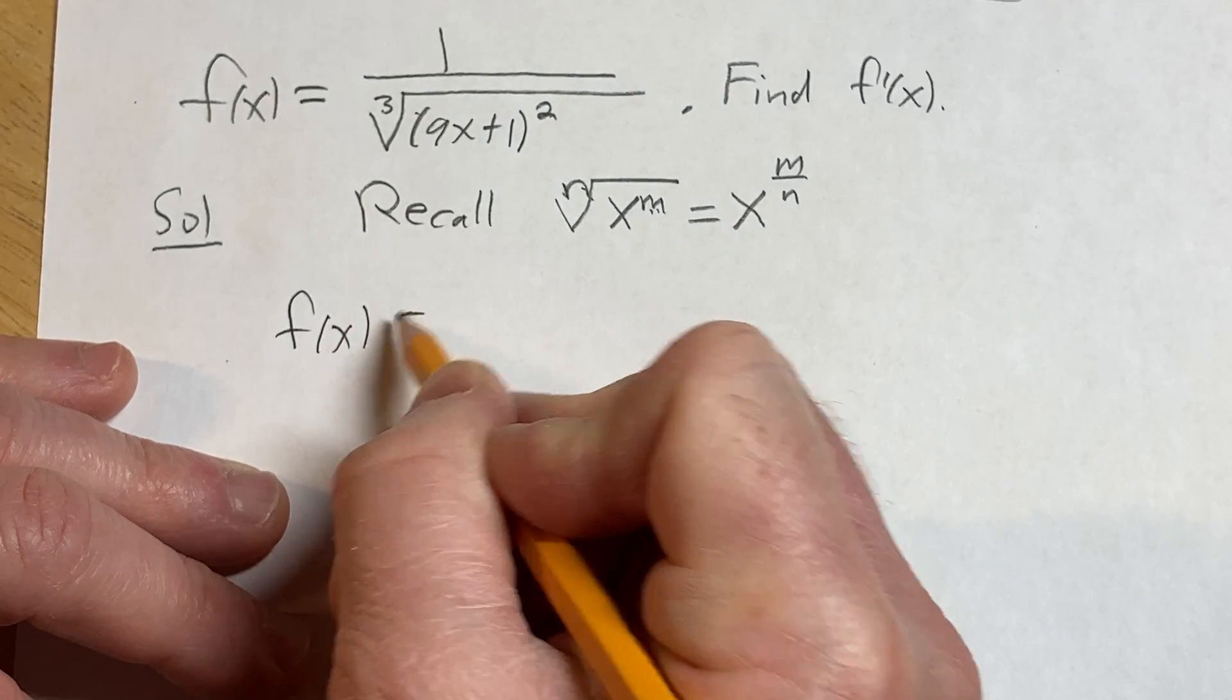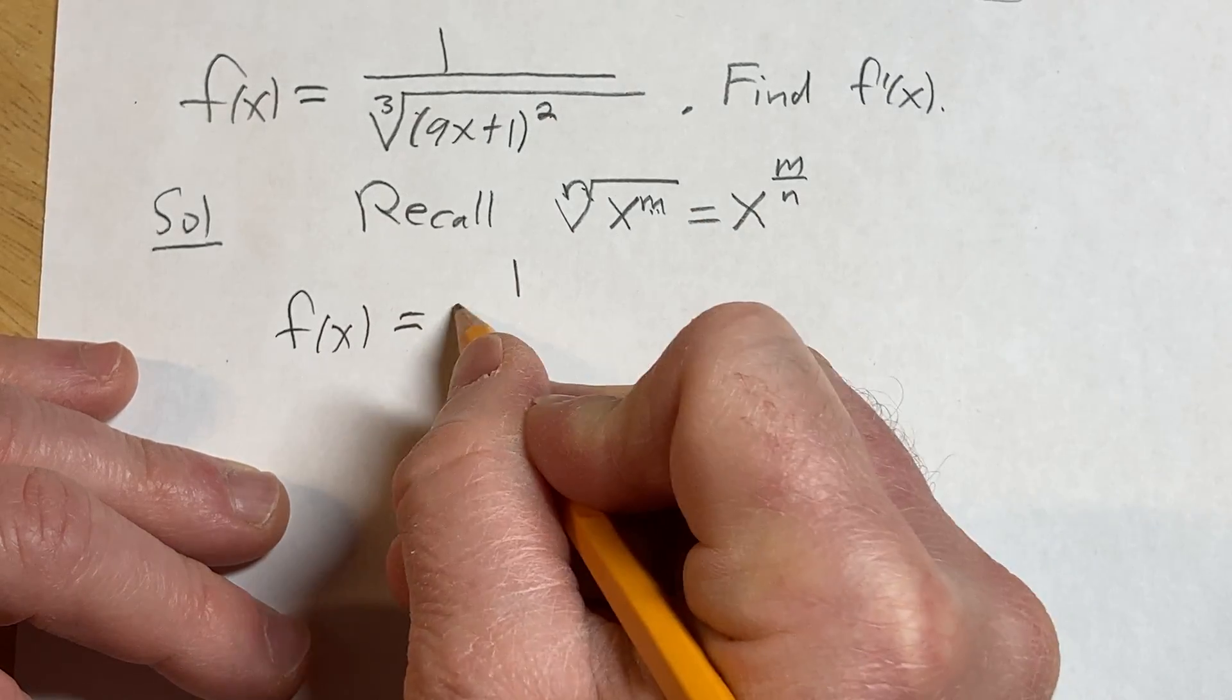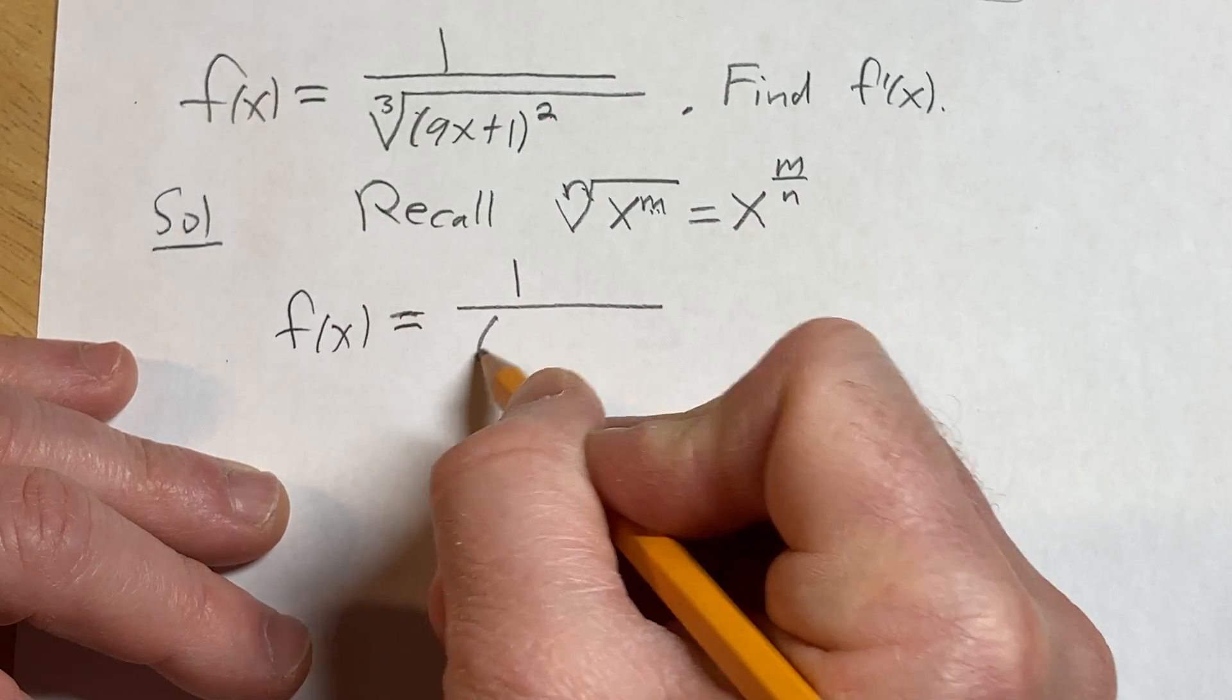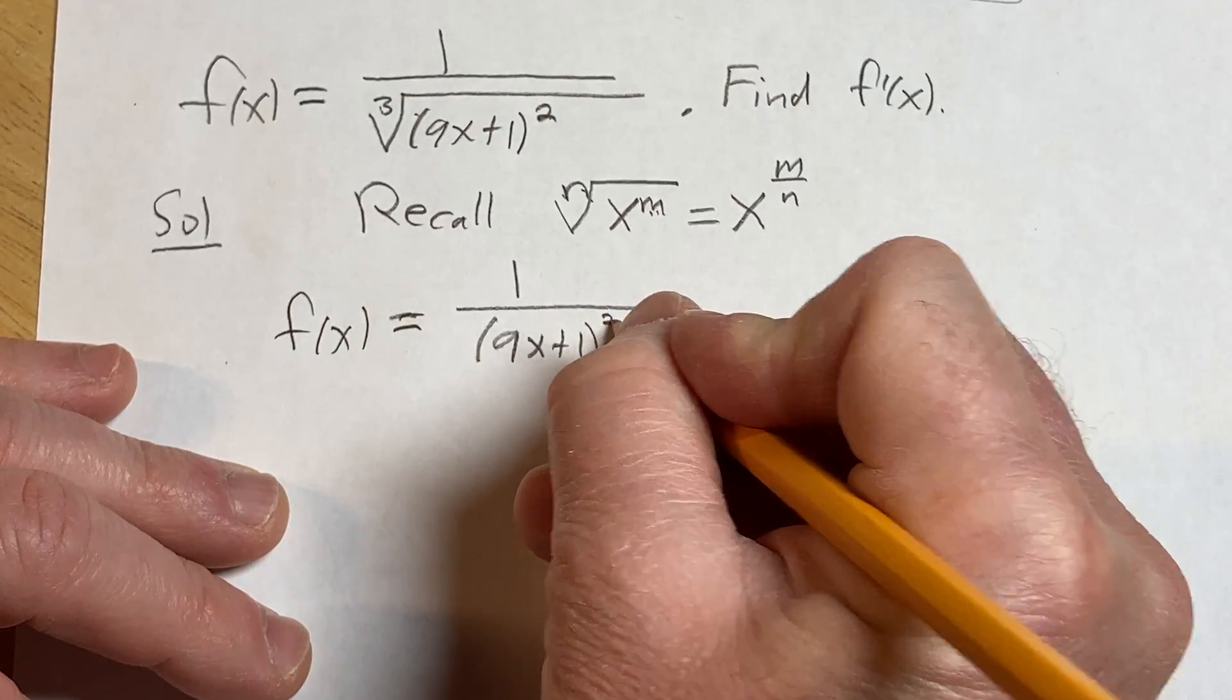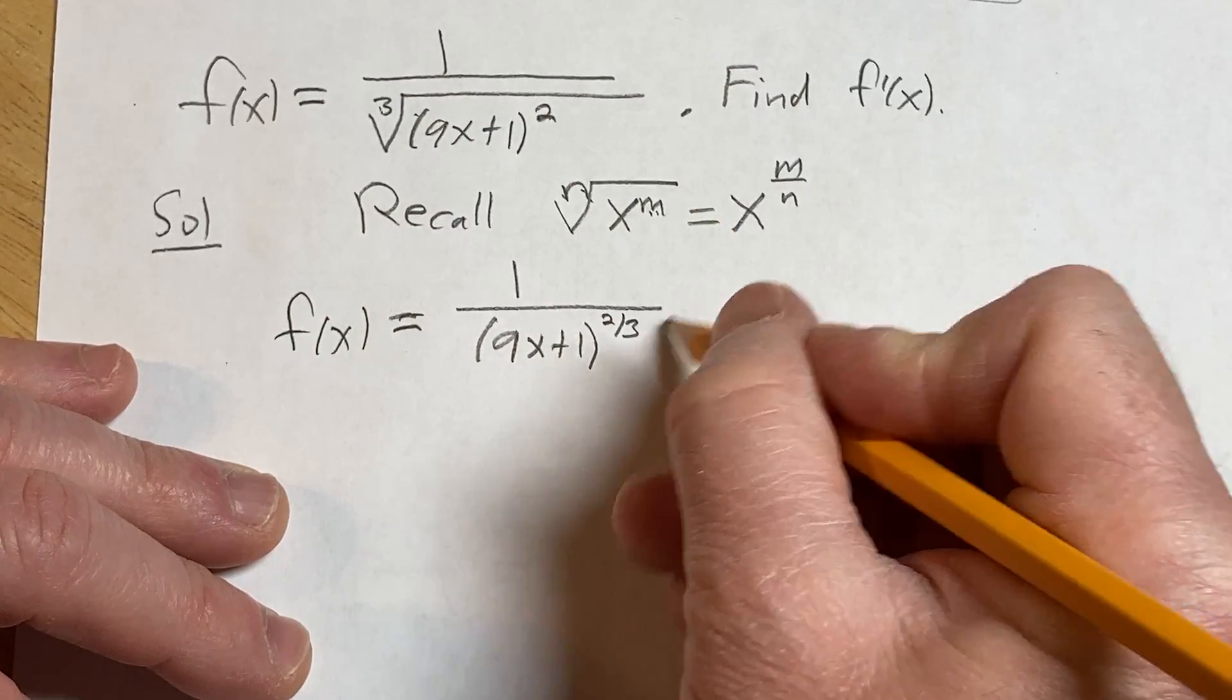So f(x) is equal to 1 over (9x+1) to the 2/3. And then we can take this and bring it up.